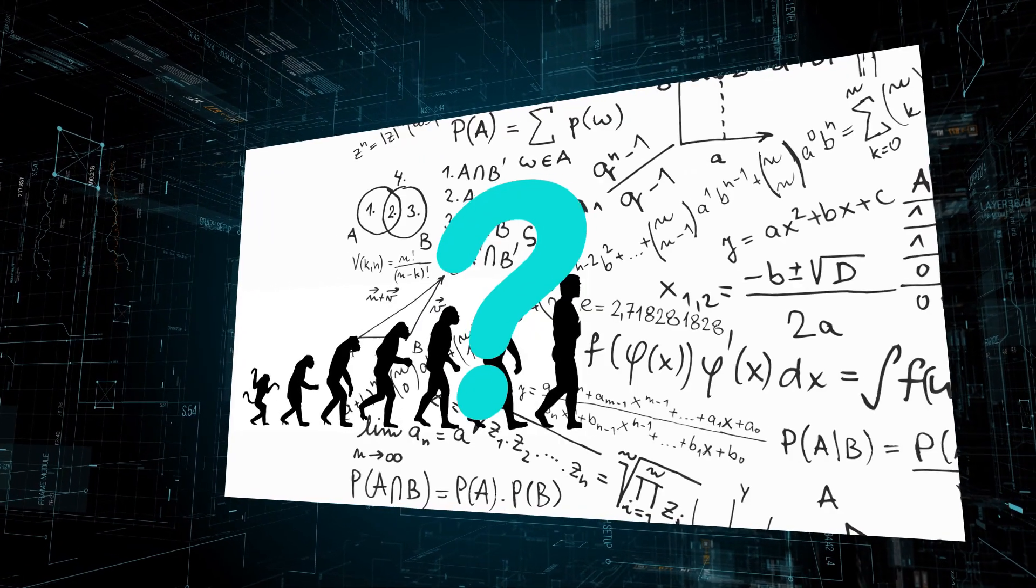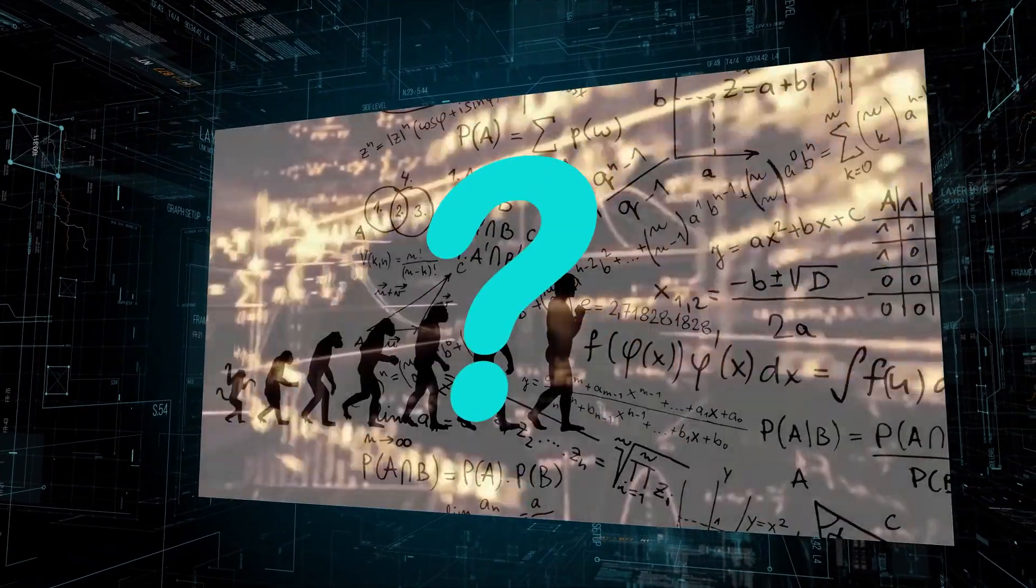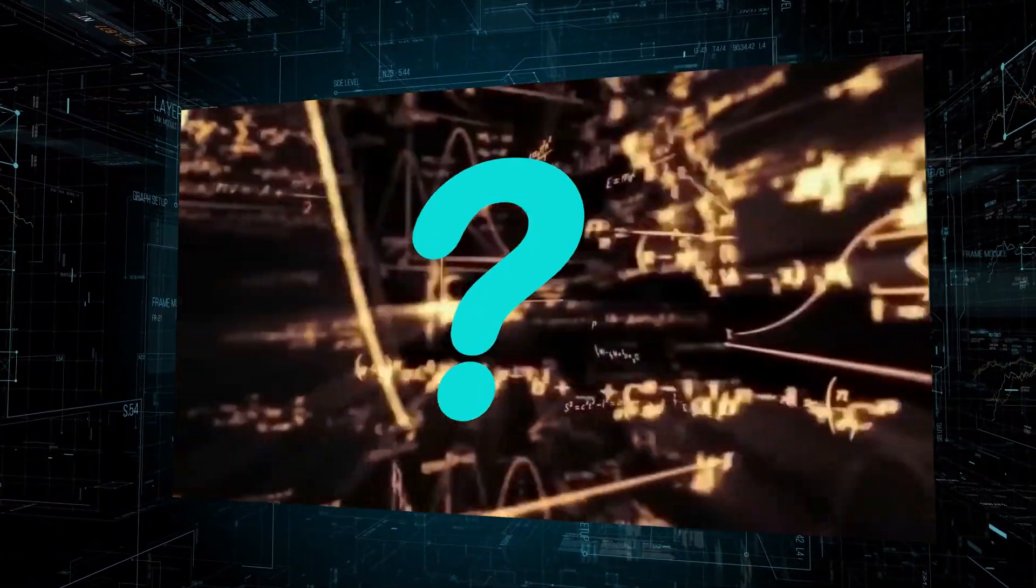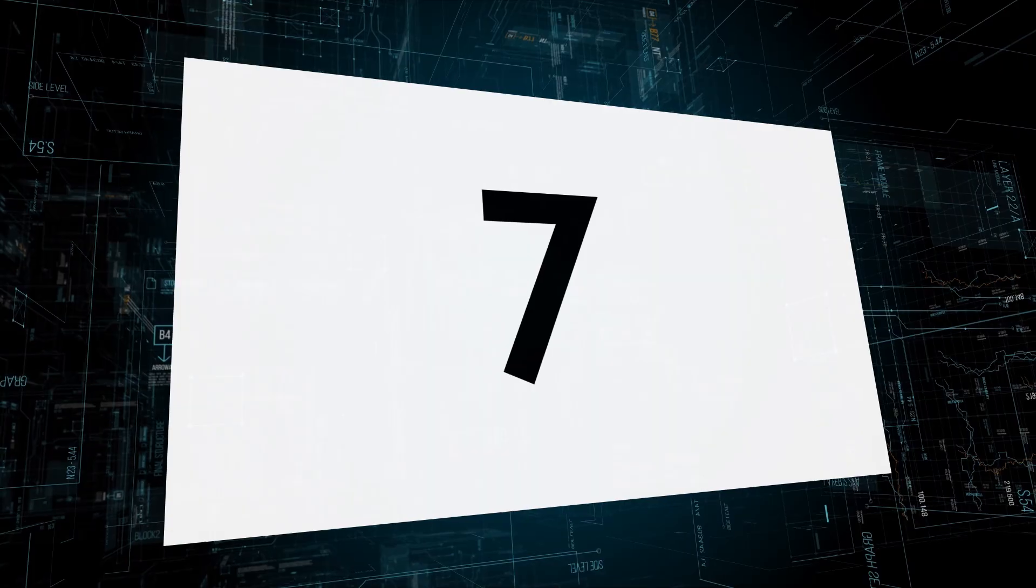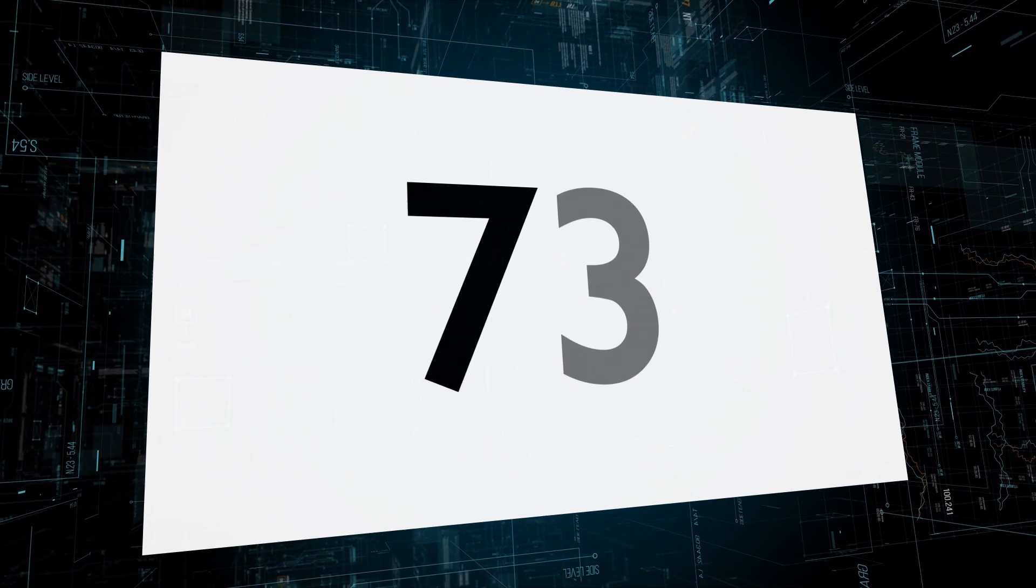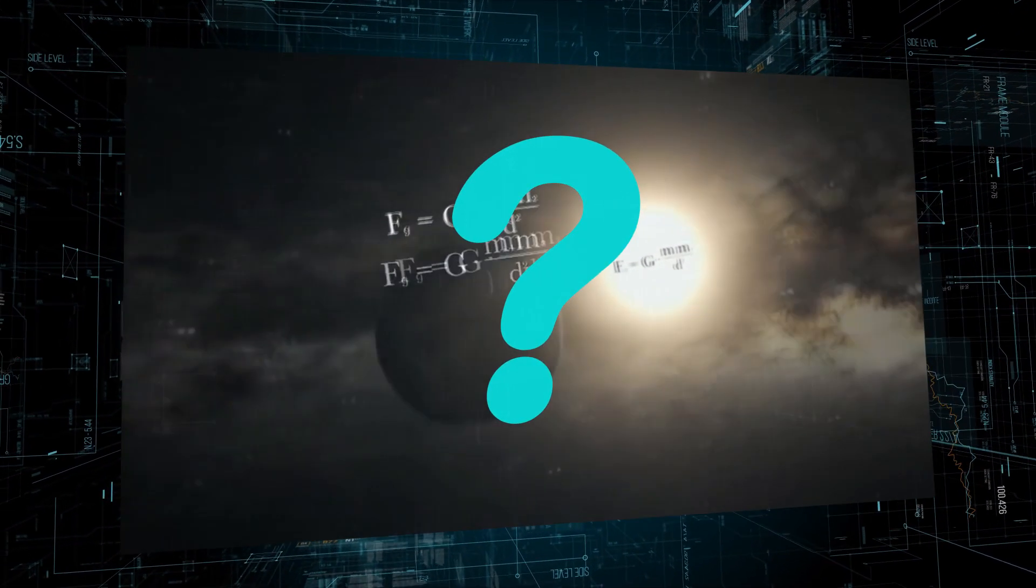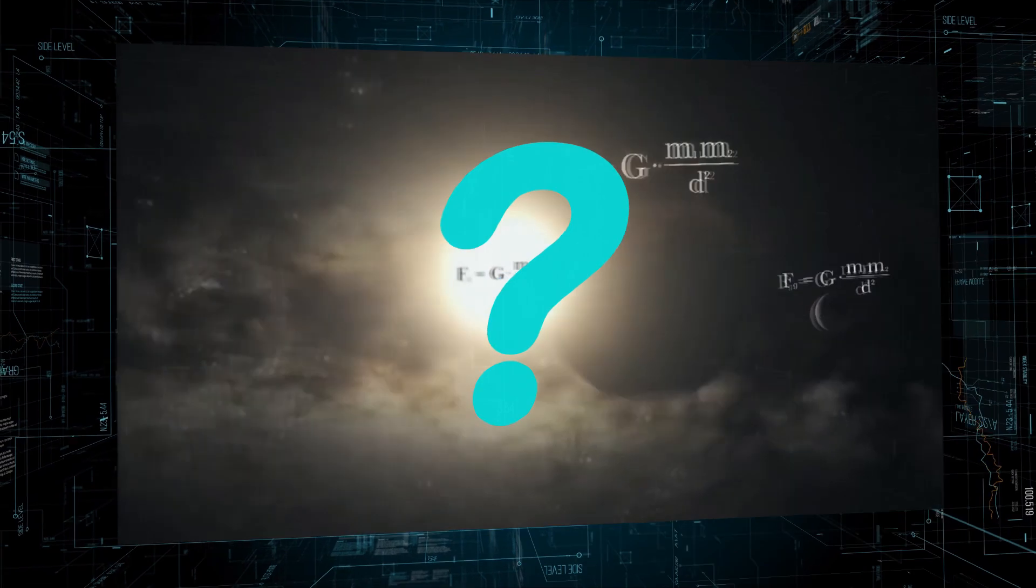Can evolution possibly explain math? Have the numbers and mathematical rules all evolved from nothing, as the evolution theory claims? Could number 7 have evolved from number 3? Or is it maybe still evolving? Are mathematical and physical laws evolving?